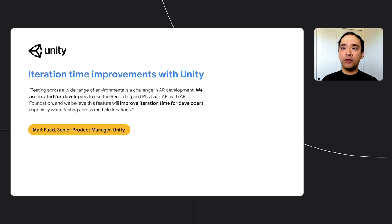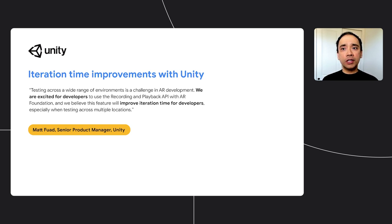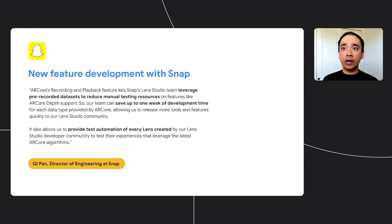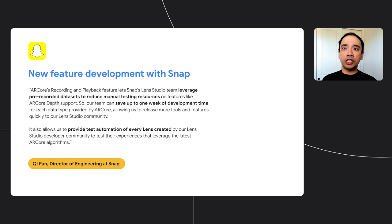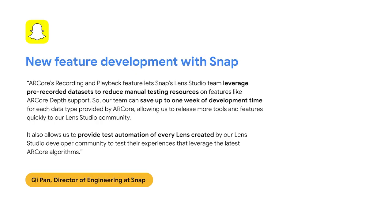Recording and playback also works well for reducing iteration time as an AR developer. Instead of having to record a video for every single Android device you want to support, for every single scenario you want to test, you can record once and play back on multiple different devices during your iteration phase. This type of controlled testing environment is important for developers like our partner Unity, which has to work consistently across many different Android devices. Recording and playback also helps reduce the manual test burden — a partner like Snap can leverage pre-recorded datasets by launching new features that incorporate depth or the latest tracking improvements from ARCore. We are excited to hear your feedback.